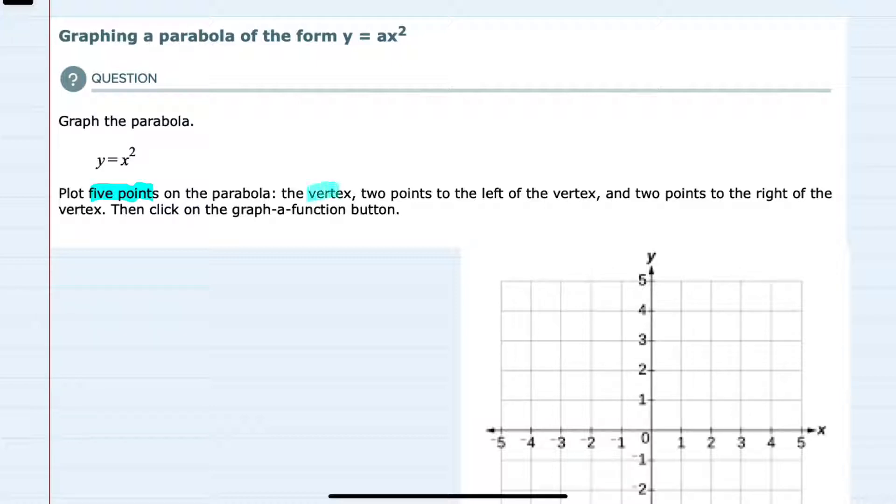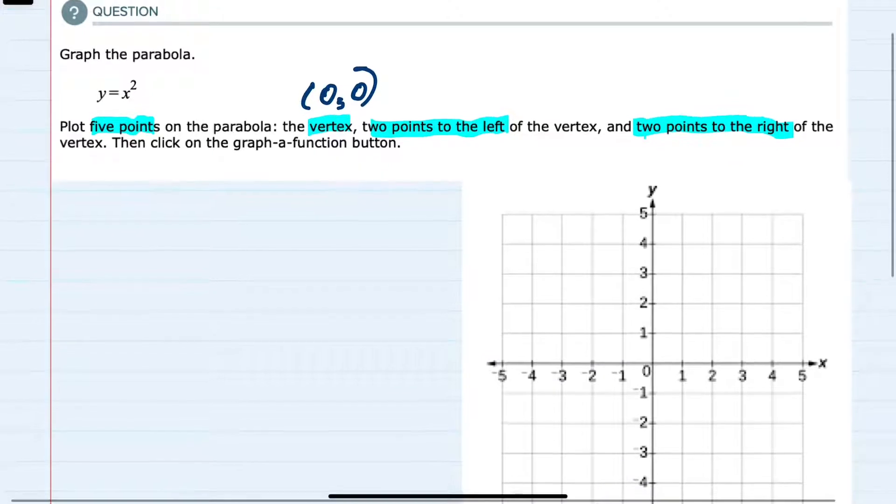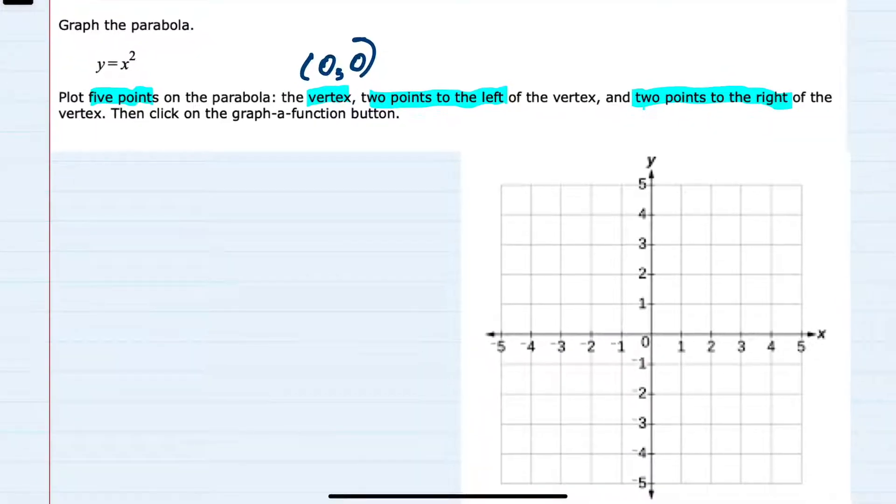Those points being the vertex, two points on the left, and two points on the right. And since this is in the form y equals ax squared, the vertex will be (0, 0).